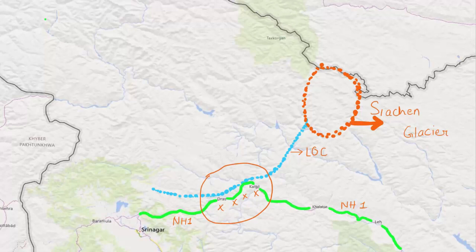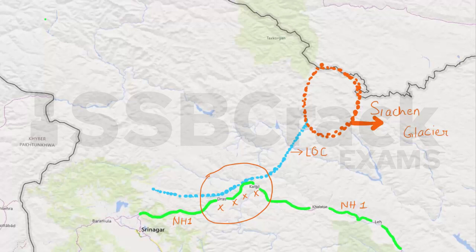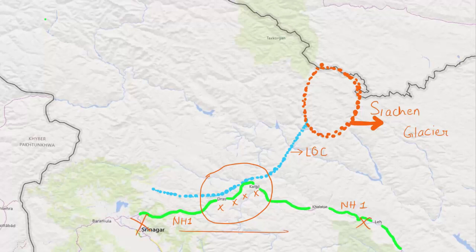The first advantage was that the Kargil region is very close to where NH1 passes. If they acquired this region and created dominance, they could cut the supply line between the valley and the glacier. This would affect the Indian military's reach to the Siachen Glacier, enabling further attacks. Additionally, the mountains in that area have a downward slope — if Pakistani forces occupied the high ground and top positions, it would be very difficult for Indian soldiers to counter them.